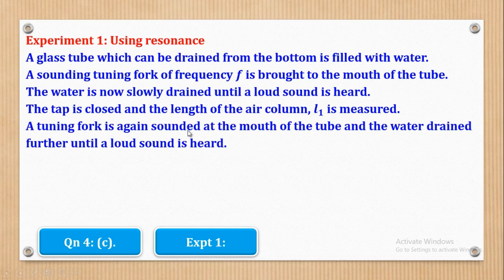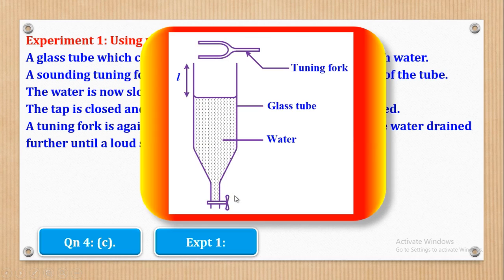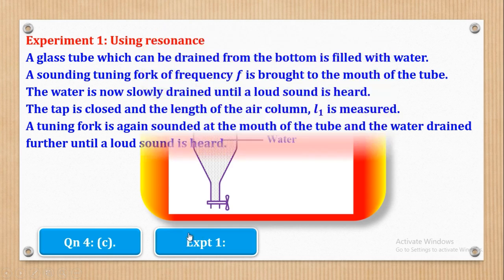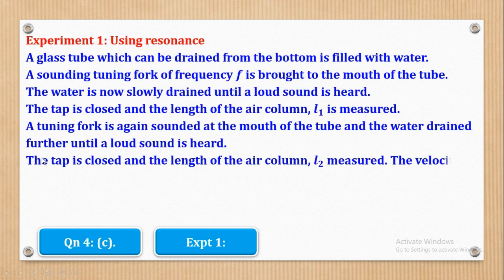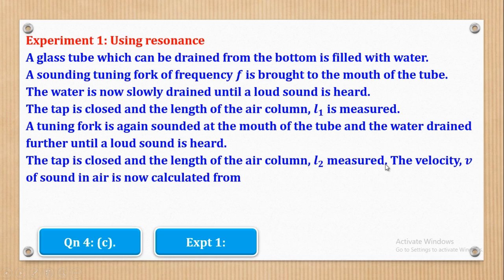The tuning fork is again sounded at the mouth of the tube and the water is drained further until a loud sound is heard again. You again open the tap, let water flow out, and when the sound is loudest you close the tap. The tap is closed and the length of the air column L2 is measured. The velocity V of sound in air can now be calculated from the formula: V = 2F(L2 − L1). F is already known from the tuning fork's frequency.